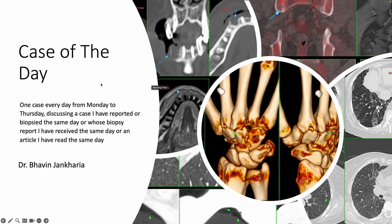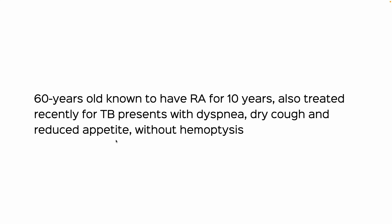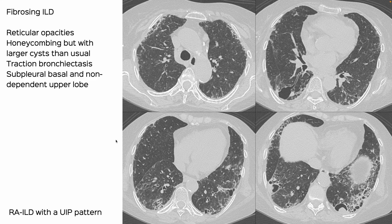Welcome to today's case of the day — Wednesday, case 66, titled RA-ILD with an unexpected complication. This is a 60-year-old known to have RA for 10 years, on treatment, also recently treated for TB. Presenting with dyspnea, dry cough, and reduced appetite but no hemoptysis. Imaging shows a fibrosing ILD with reticular opacities, traction bronchiectasis, and honeycombing with cystic change — slightly larger cysts, subpleural basal predominant.